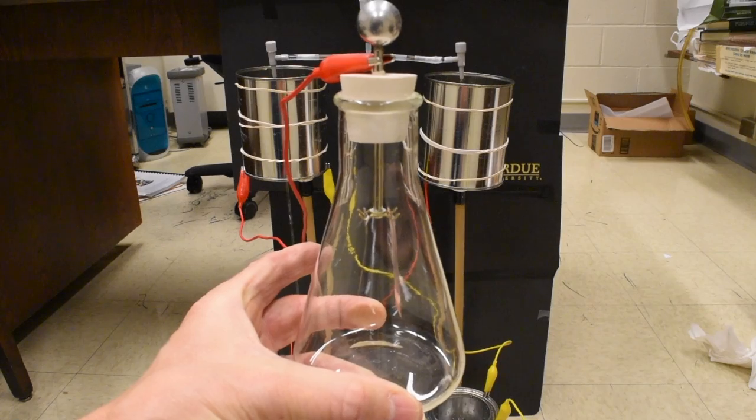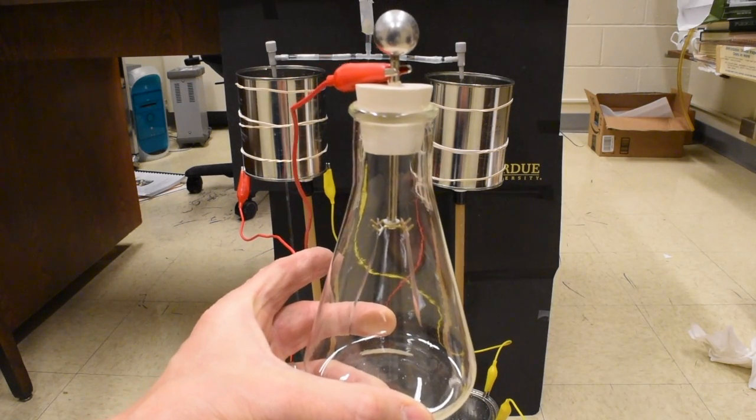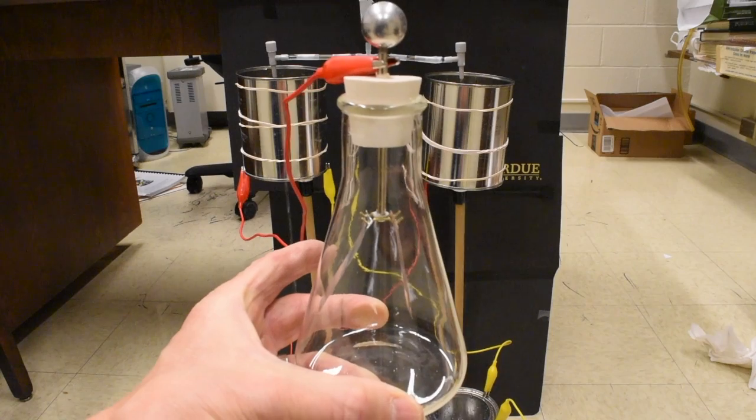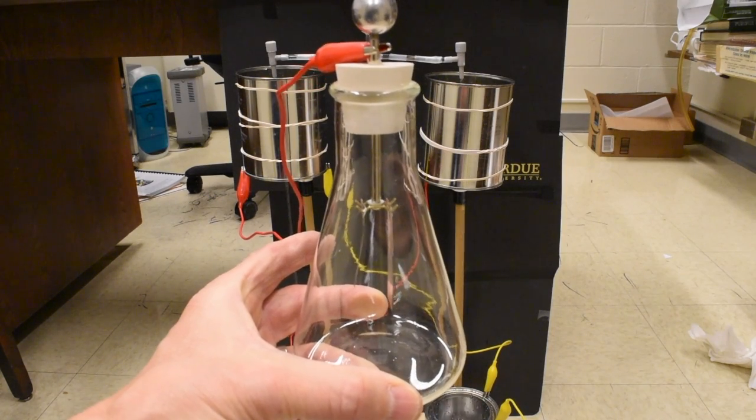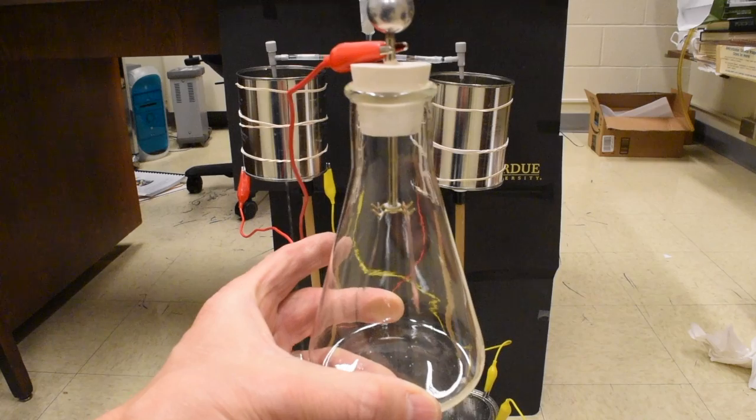As it's charging, you can see those two leaves separating in the electroscope. And when we have discharge, they collapse.